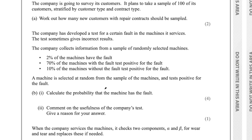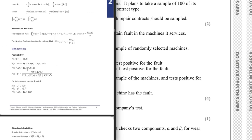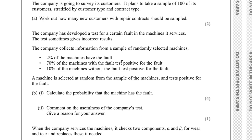The formula for conditional probability is in the formula booklet under statistics and probability. There's a more simplified version we can use. Machines with a fault: 2%, so machines without a fault: 98%. We also need the percentage of machines that test positive. They don't tell us directly, but we can work it out: 70% of the 2% with a fault test positive, plus 10% of the 98% without a fault test positive.